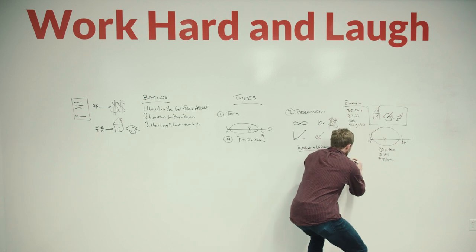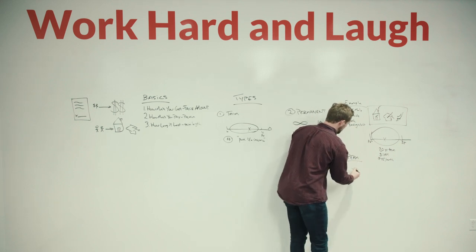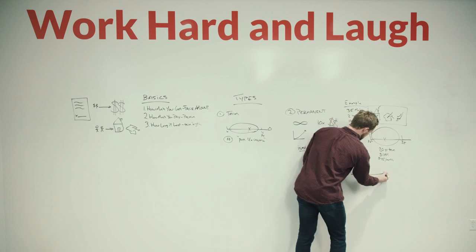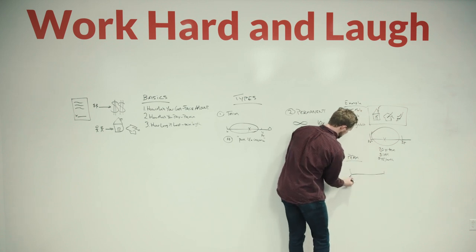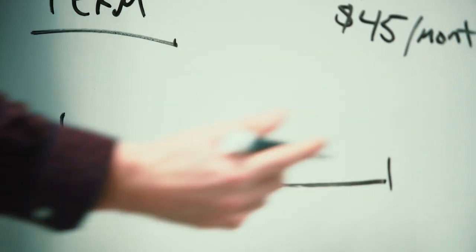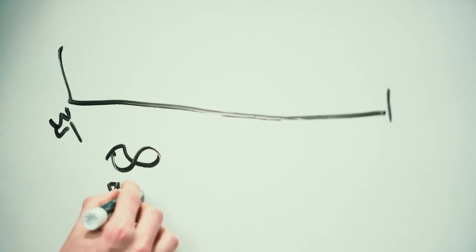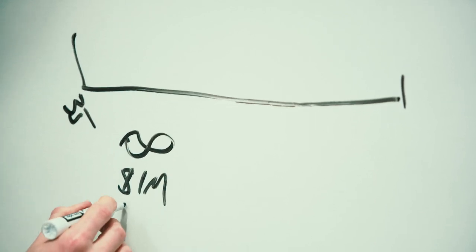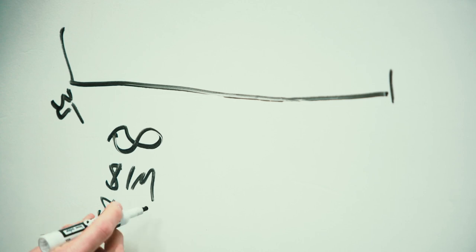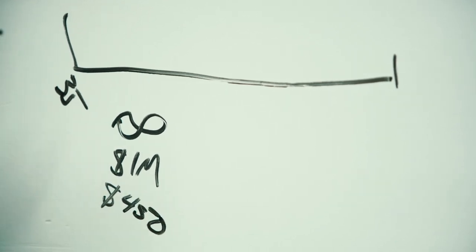Now if we look at a whole life policy or a permanent policy, getting a little low on the board here, we're going to call it PERM for now, it's a little bit of a different situation. He's still 35, however his policy is in place for the whole time. So we have an infinite term length, we're going to go with that million dollar coverage, and most likely that premium is going to be 10x, so we're looking at something like $450 a month, which adds up to a lot over the course of the year.